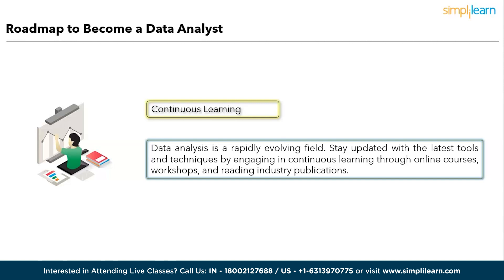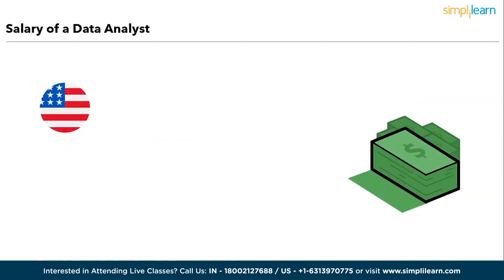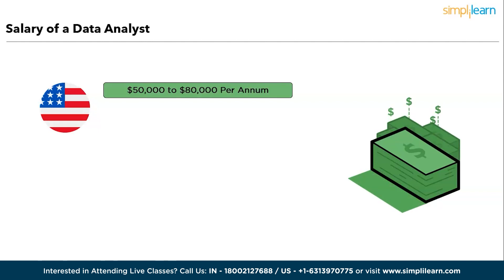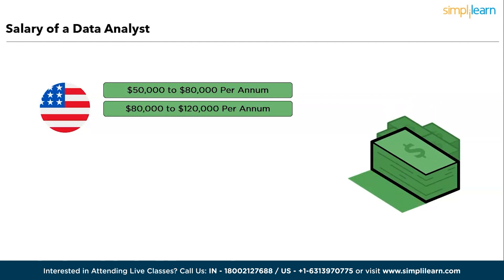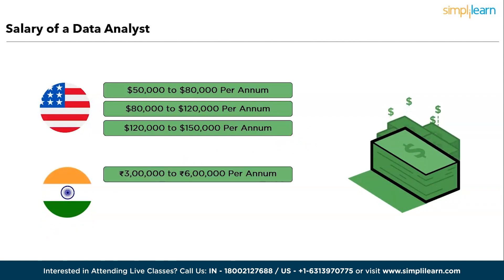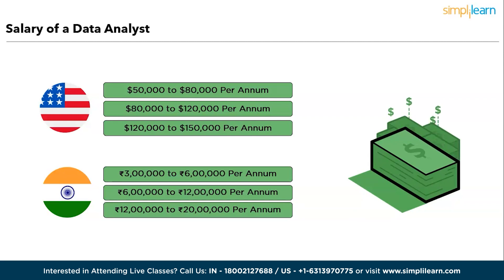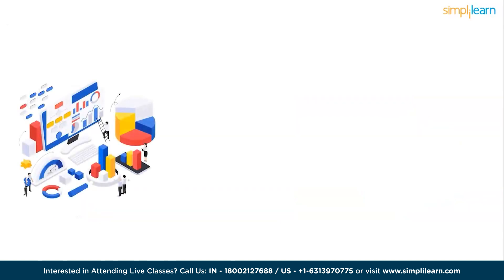Regarding salary, in the USA, entry-level data analysts can expect salaries from $50,000 to $80,000 depending on location and company. Intermediate data analysts in the US can expect $80,000 to $120,000 per annum, and experienced candidates can expect $120,000 to $150,000 per annum. In India, entry-level data analysts can expect 3 to 6 lakhs per annum, intermediate candidates with 2-3 years of experience can expect 6 to 12 lakhs, and experienced data analysts can expect 12 to 20 lakhs per annum.